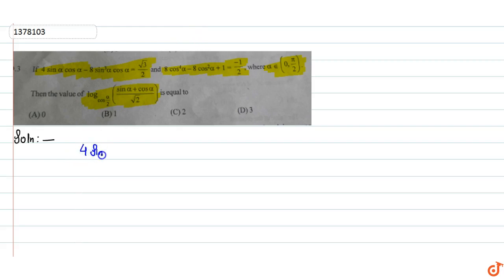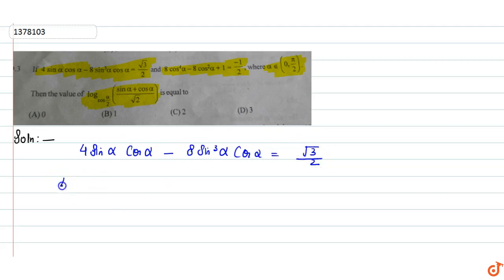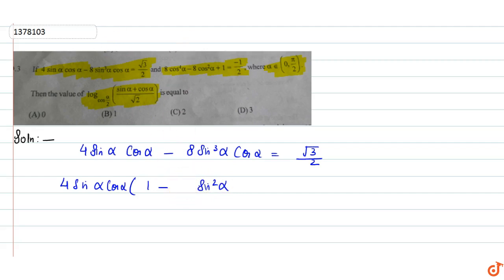अगर हम यहां पर देखें तो first equation है: 4 sinα cosα − 8 sin³α cosα = √3/2. तो अगर हम 4 sinα cosα common लेंगे तो यह value हो जाएगी 1 − 2 sin²α.